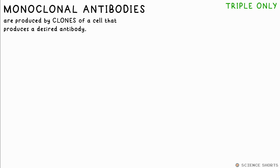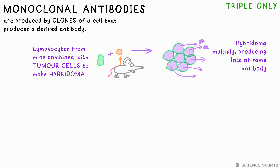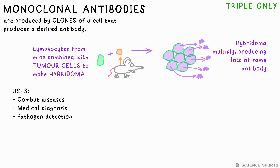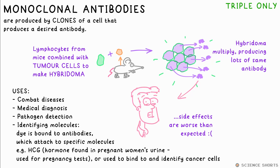Monoclonal antibodies are made from clones of a cell which is able to produce a specific antibody to combat a disease. This is achieved by combining lymphocytes from mice with tumour cells, making a hybridoma cell, which is then cloned to produce a lot of antibodies ready to treat a patient. These monoclonal antibodies can also be used for medical diagnosis, pathogen detection in a lab, or even identifying molecules in tissue by binding them to a dye so they glow when grouped together, because they're designed to bind to a specific molecule. The downside is that the side effects are turning out to be worse than scientists expected.